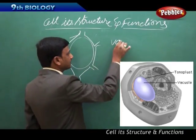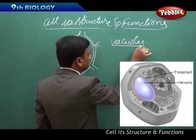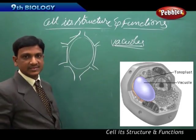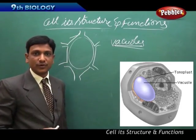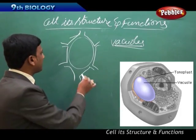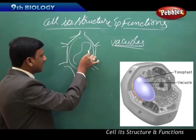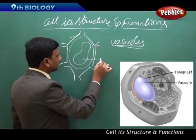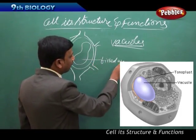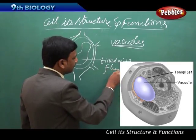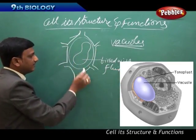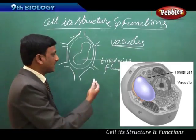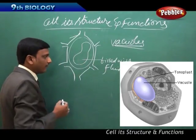Now we are going to talk about vacuoles. Vacuoles are found in both plant and animal cells. In animal cells, vacuoles are of very small size, but in plant cells they occupy the major part of the cytoplasm and are very big. Vacuoles are spaces filled with fluid, which contains water, minerals, salts, and so on.